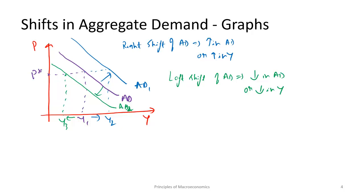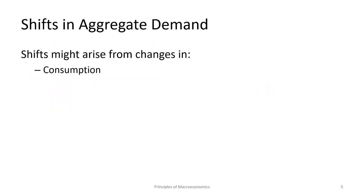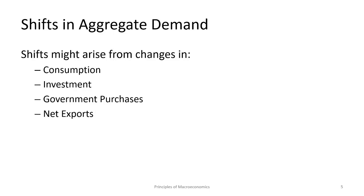What causes these left or right shifts in aggregate demand? There are four reasons: changes in consumption, changes in investment, changes in government purchases, and changes in net exports. Aggregate demand is total expenditure in the economy — people spend through consumption, businesses through investment, the government is a big spender, and the foreign sector contributes through net exports. If any of these increase, it causes a right shift of aggregate demand, meaning more output is demanded at the same prices and GDP goes up.